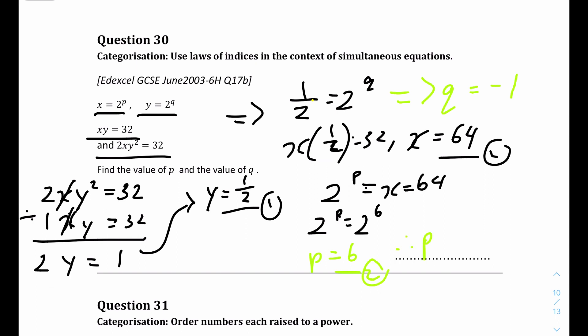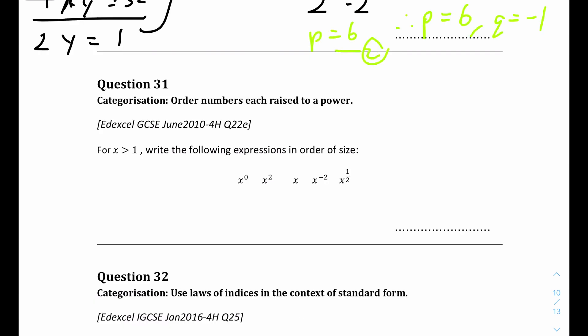Question 31: for x greater than 1, write the following expressions in order of size. Looking at the powers: x to the power of minus 2 is the smallest, then x to the power of 0, then x to the power of one half, and finally x squared - that's the correct order from smallest to largest.